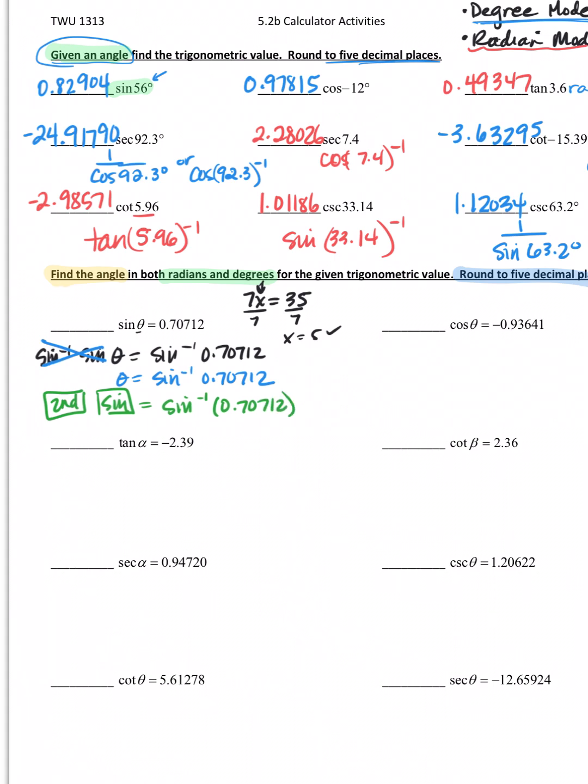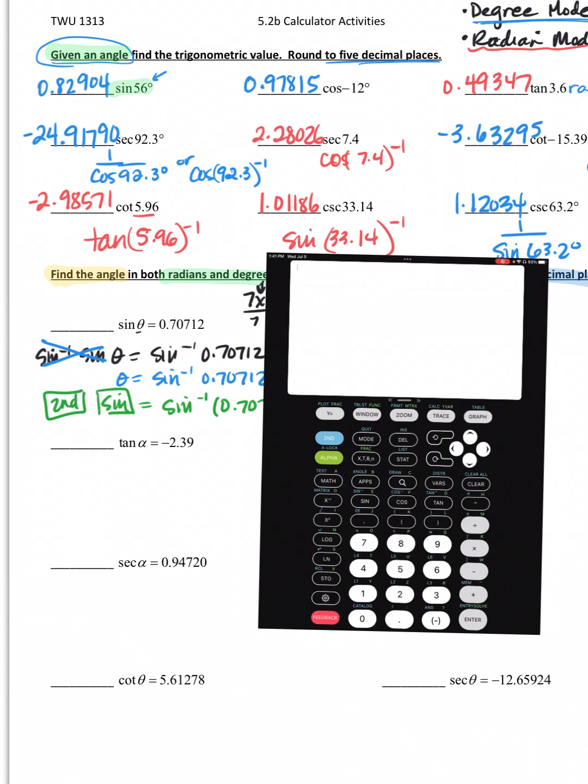Now I want to point out something - look at the inverse. The inverse is on the sine here. On the ones up here, the inverse was on the whole function. That's important because in your calculator if you use the keystrokes second and hit sine, you will get sine to the negative 1. It'll open a parenthesis and 0.70712 is what I want to put in there. It doesn't matter degree or radian mode because we're going to do both.